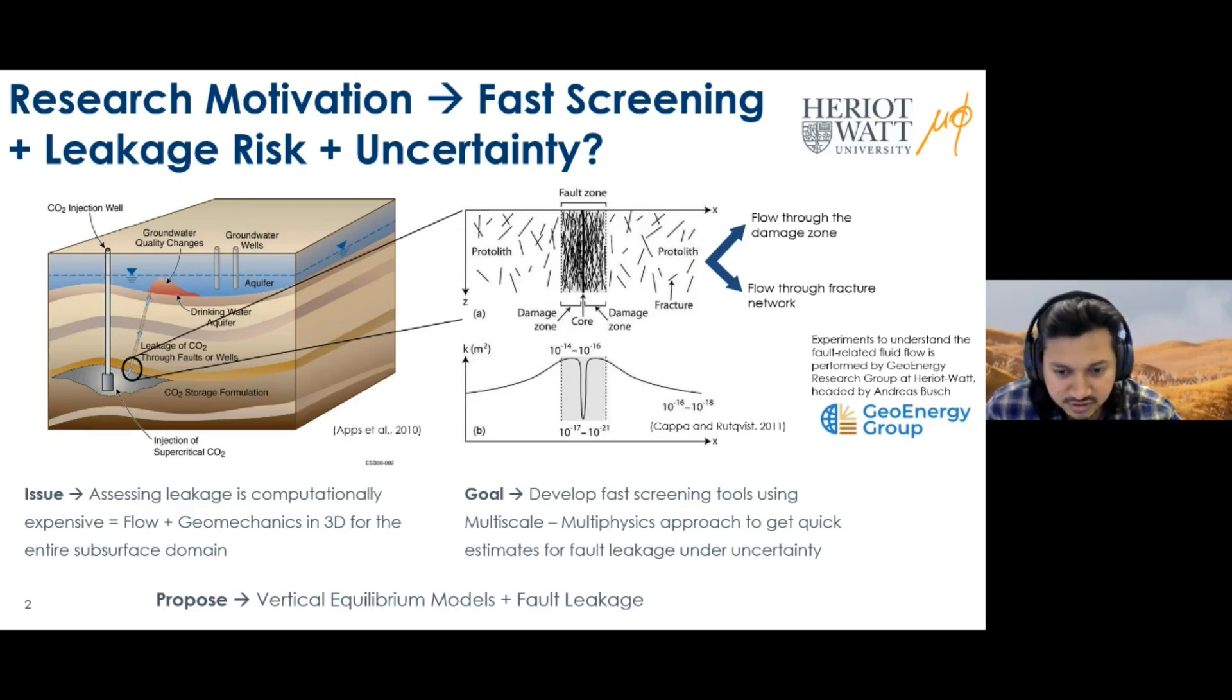Conducting a full-scale 3D flow coupled geomechanics simulation to resolve this issue is computationally expensive. Our goal is to address this problem by developing a fast screening tool using a multi-scale, multi-physics approach within a vertical equilibrium model setting. This is a quick approach to get an approximate fault leakage estimate for a wide range of uncertainties and to quickly identify end-member scenarios.